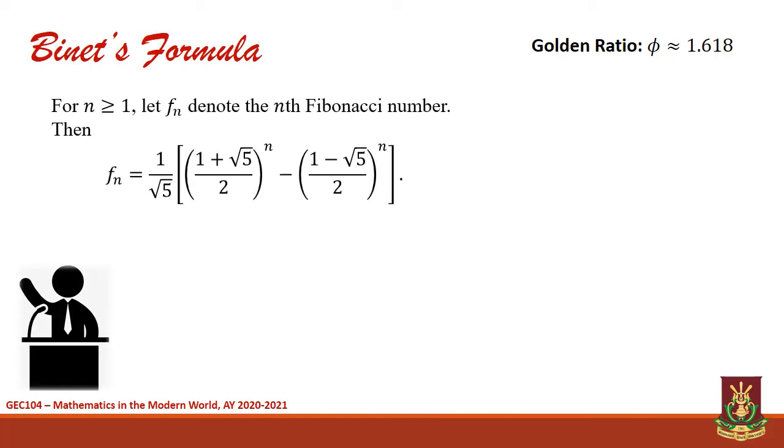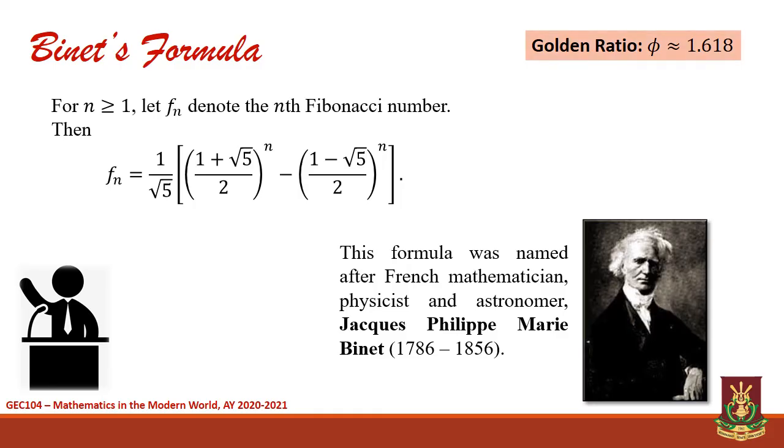For n greater than or equal to 1, we may solve for the nth Fibonacci number using the formula: 1 over the square root of 5 times the quantity (1 plus the square root of 5 over 2) raised to the power of n minus the quantity (1 minus square root of 5 over 2) raised to the power of n. This formula is called Binet's formula, which was named after the French mathematician, physicist, and astronomer Jacques Binet.